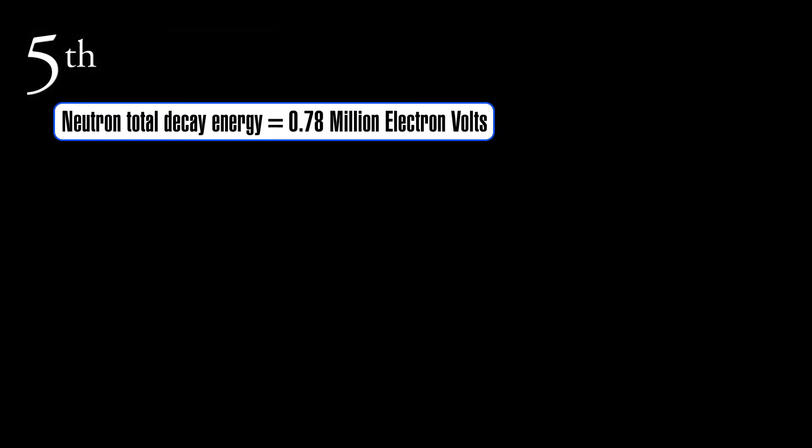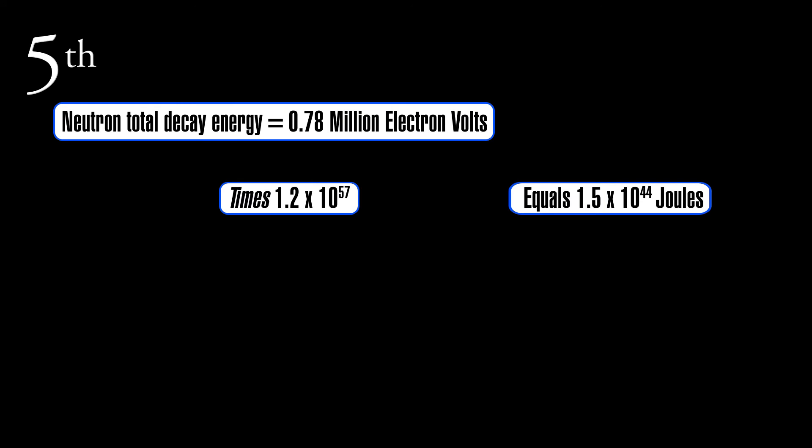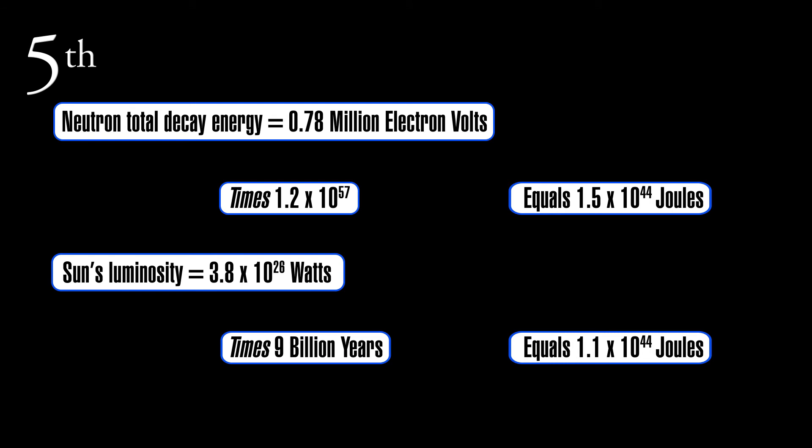Maybe. Fifth, when a neutron decays, the energies of the proton, the electron, and the anti-neutrino all vary. However, the total decay energy remains the same: 0.8 million electron volts. The same factor — 1×10⁵⁷ — used to scale a mass from the quantum scale to the cosmic scale, scales 0.8 million electron volts up to 1.5×10⁴⁴ joules. The sun's luminosity radiates an energy equal to 1.1×10⁴⁴ joules in 9 billion years. The sun radiates a total energy close to a cosmic scale neutron's total decay energy. Is this just a coincidence? I don't think so.